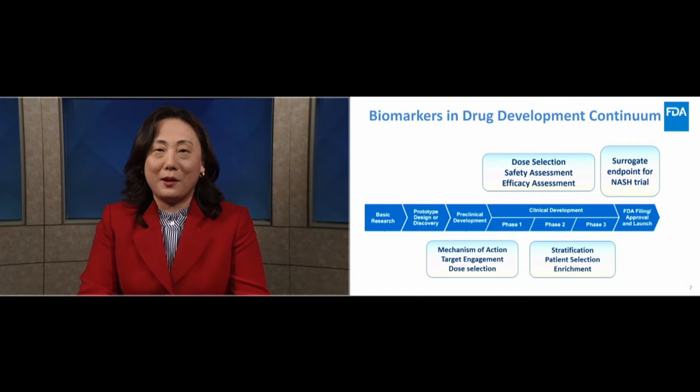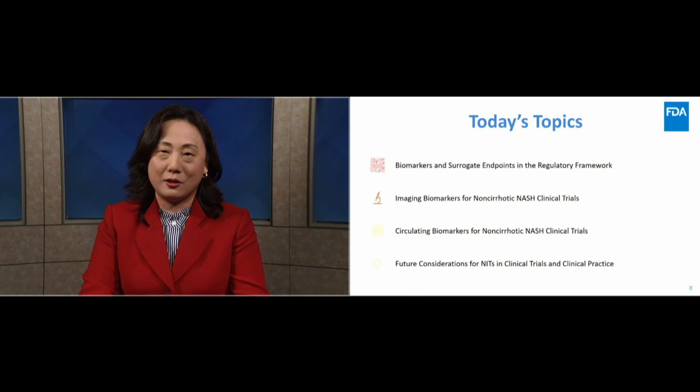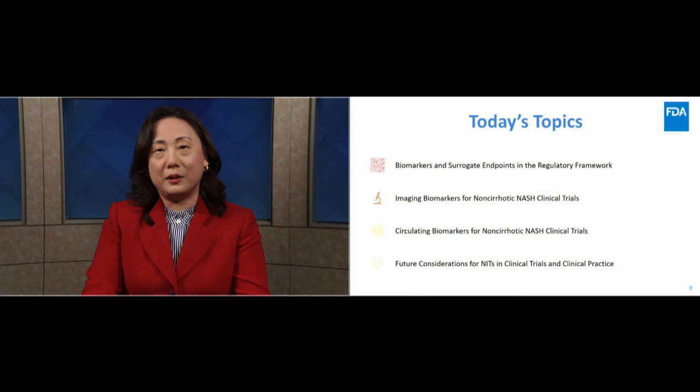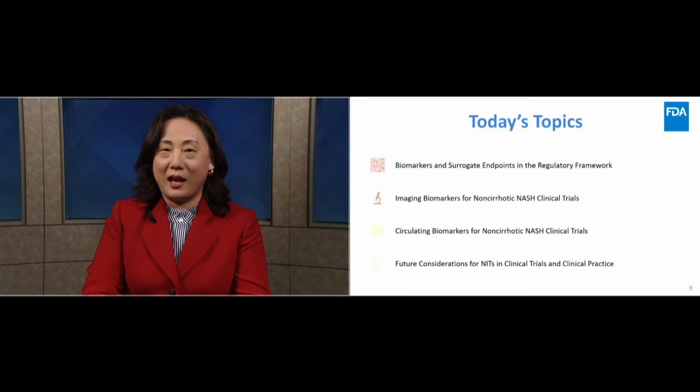Today, we are going to hear about the currently available data on the performance of imaging biomarkers and circulating biomarkers for diagnosing and assessing treatment response in non-cirrhotic NASH trials. Considerations for development of non-invasive biomarkers for clinical trials and clinical practice that can accurately and reliably assess presence, staging, grading, and progression of disease will also be discussed. First, my colleague Dr. Rebecca Hager will talk about biomarkers and surrogate endpoints in the regulatory framework. Dr. Hager is the lead mathematical statistician of the Office of Biostatistics at FDA, supporting the development and evaluation of drug products for liver disease.